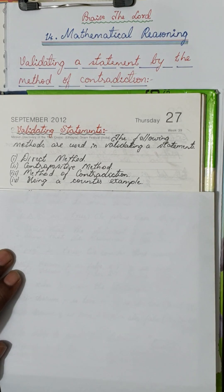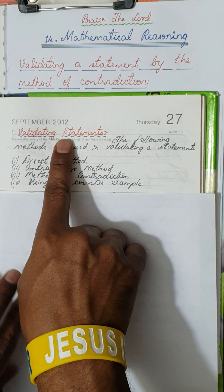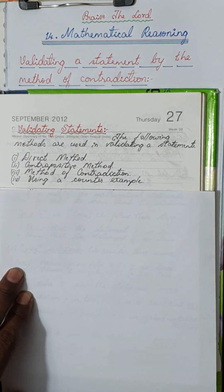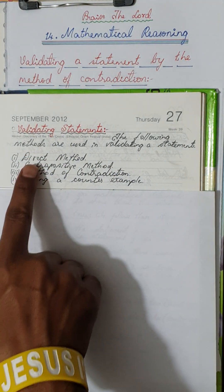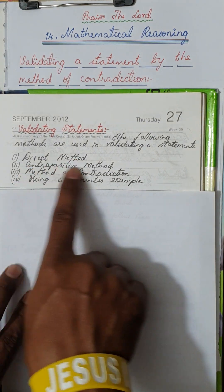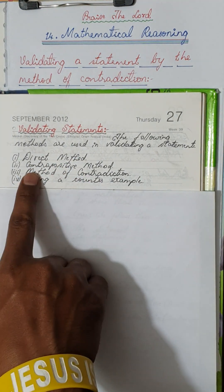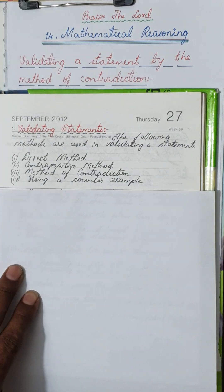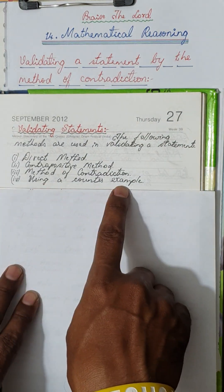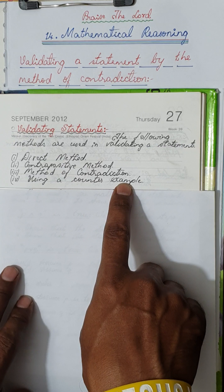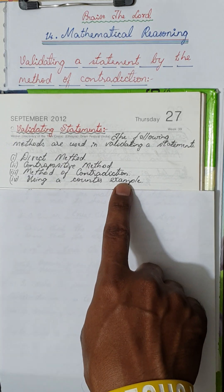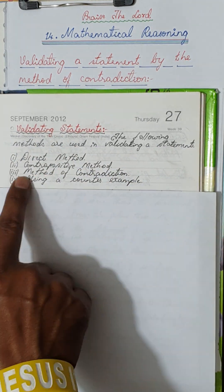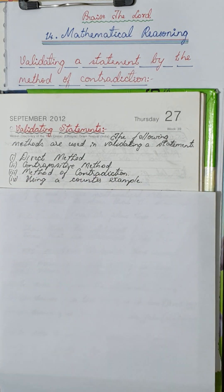Dear students, I have already talked about the statement of validity. The following methods are used in validating a statement. One is direct method. The second one is contra-positive method. The third one is method of contradiction. Fourth one is using a counter-example. So we are not going to see all four today. We are going to see only one method, which is the method of contradiction.